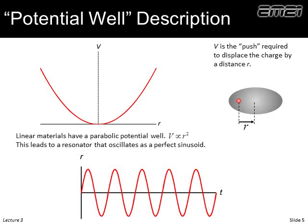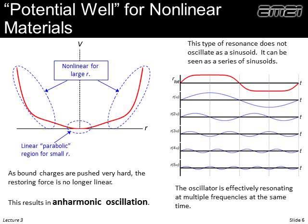Folks describe this in terms of a potential well, where V is the potential and R is the displacement. In a linear system, we get a smooth symmetric potential well, and if we drive it harmonically, the displacement looks like a nice cosine response. When the potential well is nonlinear, even though we are pushing much harder, the displacement is much less, and we get a nonlinear response.